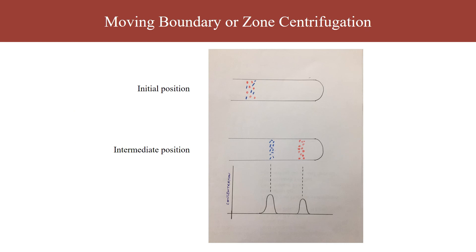Another variation of differential centrifugation is moving boundary centrifugation. Suppose there are two proteins of different molecular weights in the homogenate — we load them into a centrifuge tube and try to separate them. The red one is the heavy protein and the blue is the light protein. As centrifugation proceeds, they slowly start getting separated. We then pull out the fraction of interest — say the blue protein — and concentrate it to avoid contamination. This is called moving boundary centrifugation.